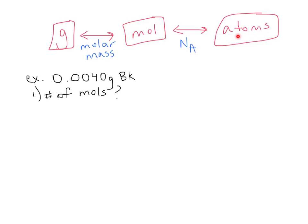Avogadro's number converts between moles and atoms. So if you're going from atoms to moles, or moles to atoms, you use Avogadro's number, which is 6.02 times 10 to the 23rd atoms per mole — because it has two units, it's a great conversion factor. So let's do the example: 0.0040 grams of BK. BK is berkelium — it's number 97 on the periodic table. Pull out your periodic table and find BK right now.